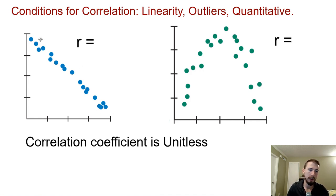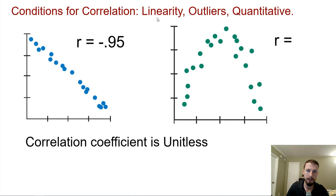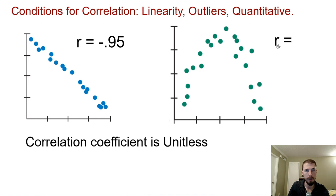This negative association would have a correlation close to negative one — maybe negative 0.95. And this one is not linear, so it's not appropriate to calculate the correlation coefficient. It would be hyperbolic or an inverse parabola. In fact, if we did calculate the correlation coefficient for a curved relationship like that, we would get a value close to zero. We'll talk tomorrow about how we calculate those — as a hint, we actually calculate it based on Z-scores.